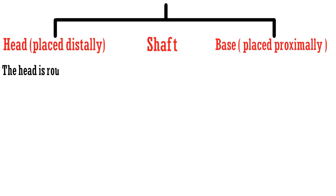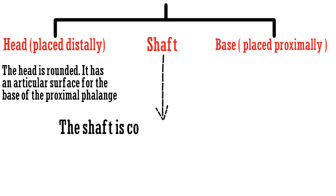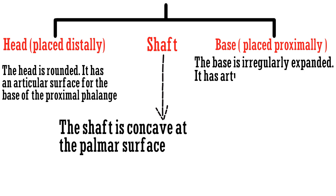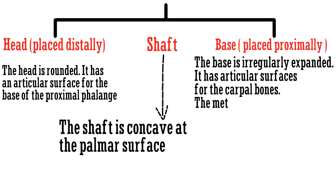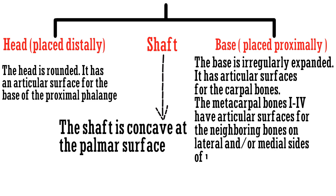The head is rounded and has an articular surface for the base of the proximal phalanx. The shaft is concave at the palmar surface. The base is irregularly expanded and has articular surfaces for the carpal bones. Metacarpal bones 1 to 4 also have articular surfaces for the neighboring bones on the lateral and/or medial sides of their base.